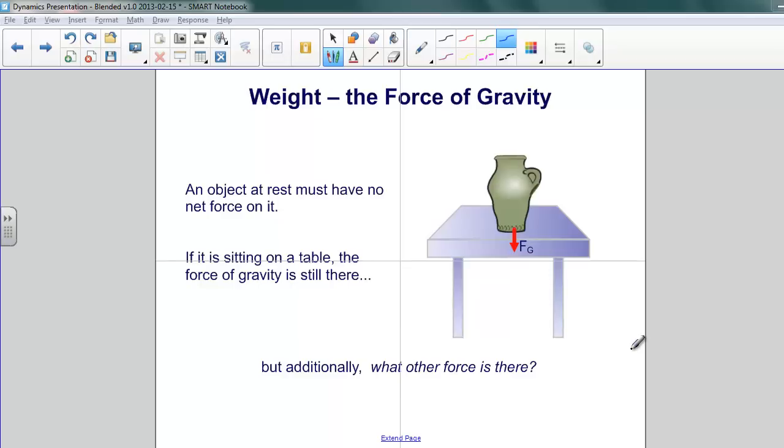So if there's a force of gravity pulling down, and the net force on the object is zero, what's pushing the object up? What's the other force? So that we have a net force of zero.